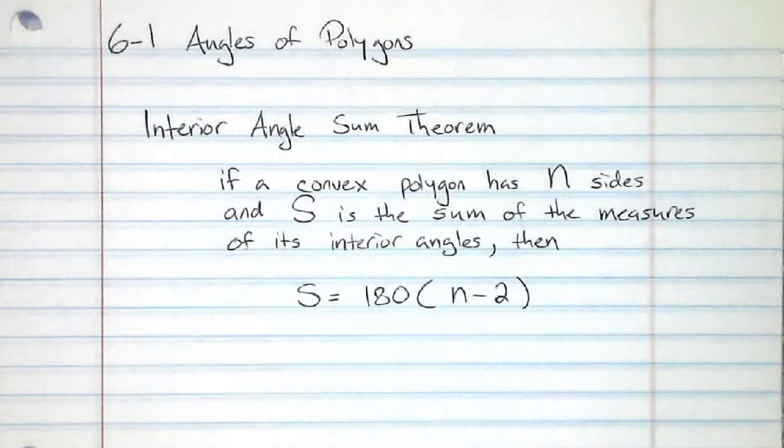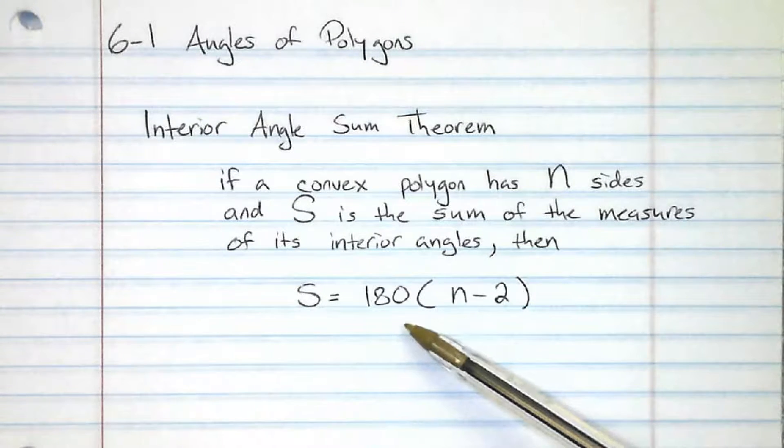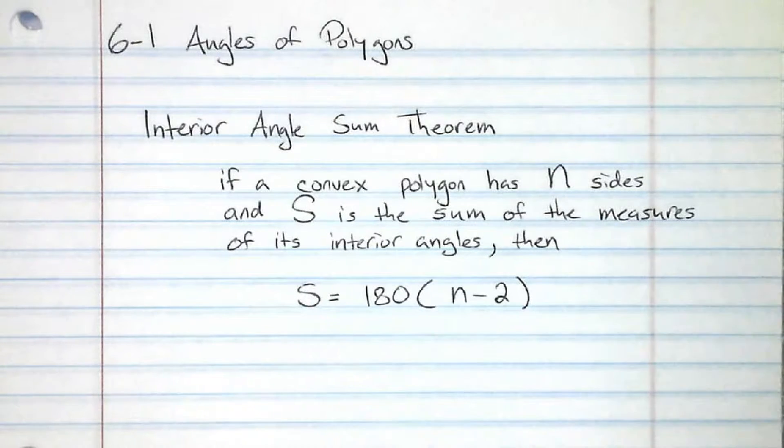Basically, what we're saying here is if you count the sides of any convex polygon, if you count the sides, subtract 2, and multiply that number times 180, then that's going to give you the sum of all the interior angles. Let's take a look at some examples.